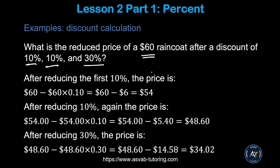At the cash register, the price starts at $60. The cashier scans the first coupon — 10 percent off $60 — reducing the balance to $54. Then the second coupon takes 10 percent off $54 (not the original $60, because $54 is now your balance), bringing it to $48.60.